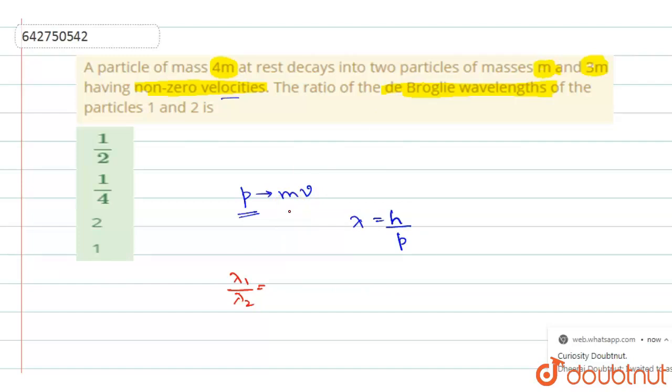So when you say the law of conservation of linear momentum is present, it means that initial momentum will be equal to final momentum. Initially, it does not have any momentum because it is at rest, right? So pi, the initial momentum, is 0.